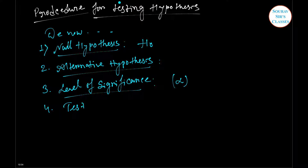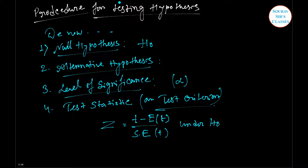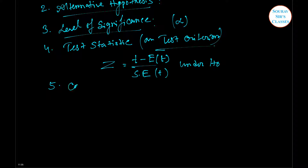Step 4: Test statistic — compute the test statistic: z = (T − E(T)) / SE(T) under H₀. Step 5: Conclusion.